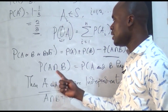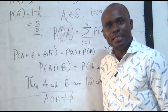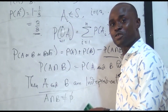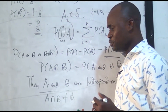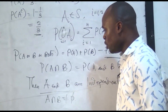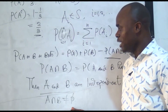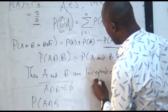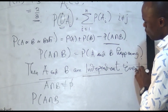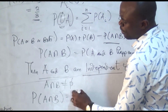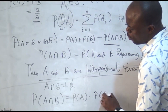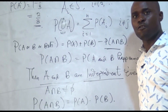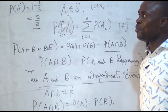This means that A and B can happen at the same time concurrently — for example, me talking and teaching at the same time. So A intersection B is non-empty. In such a case, for independent events, the probability of A and B is equal to the probability of A times the probability of B. That is a very important rule we must understand.